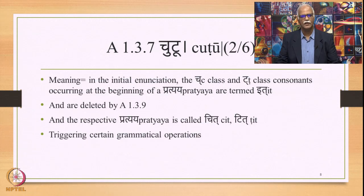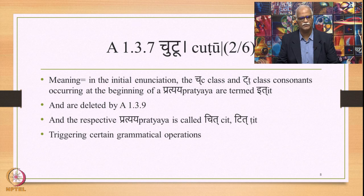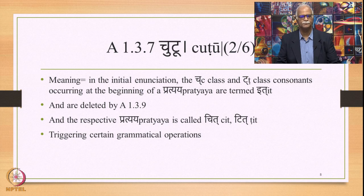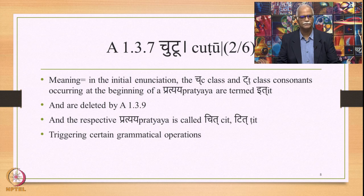What this means is: in the initial enunciation, the Ch class and the T class consonants occurring at the beginning of a Pratyaya are termed 'Ith'. They are then deleted by 1.3.9 Tasya Lopaha, and the respective Pratyaya is called 'Chith' — having Ch as Ith — or 'Tith' — having T as Ith. This Chith and Tith then triggers certain grammatical operations.